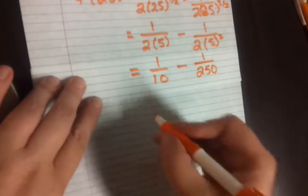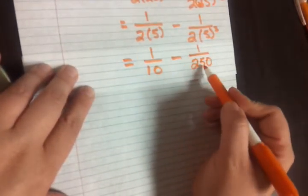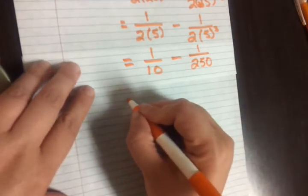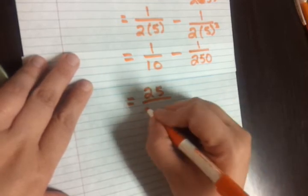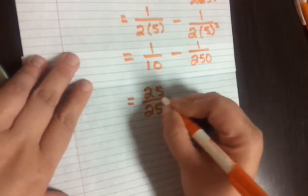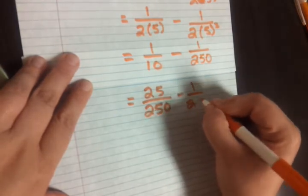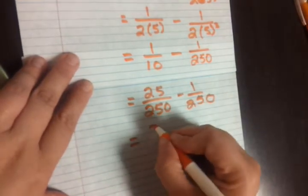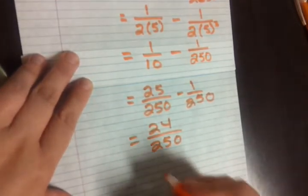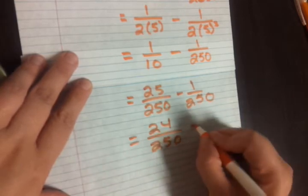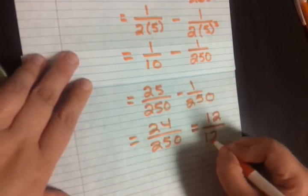And then I just need to get common denominators. So I need to make both of these have the same denominator. We're not going to go over basic fraction rules. I'll get 25/250 minus 1/250. That's going to give me 24/250. And I think I can divide both of those by 2, which is going to be the same as 12/125.